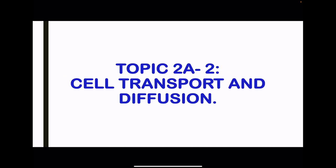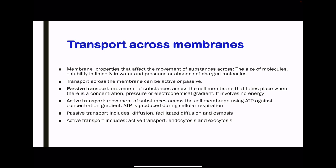Moving on to topic 2A2: cell transport and diffusion. Here we're going to talk about transport across membranes, looking at passive as well as active transport mechanisms. The components within the membranes affect the movement of substances across. The size of the molecules, their solubility in lipids, and the absence or presence of charge all determine which method is going to be used to transport substances in or out of the cell.